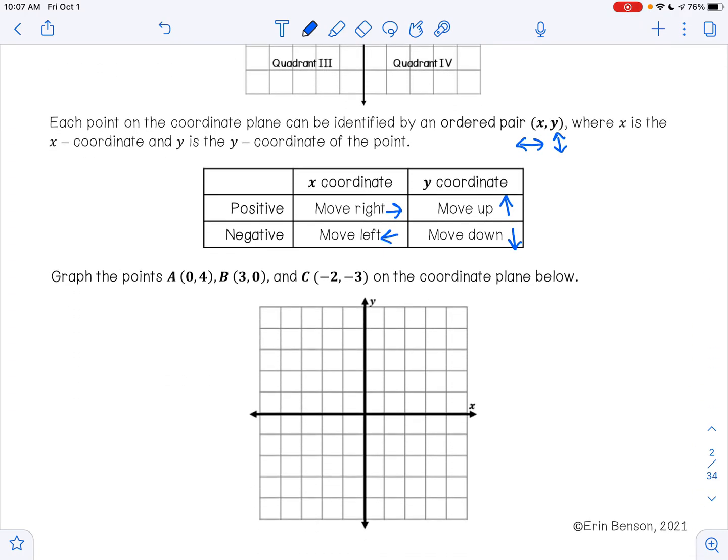So it says graph the points A, B, and C on the coordinate plane below. The first point is A, and that is the point (0, 4). This tells me to go 0 left to right, and then because 4 is positive, it's telling me to go up 4.